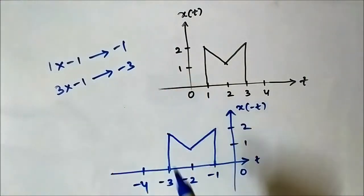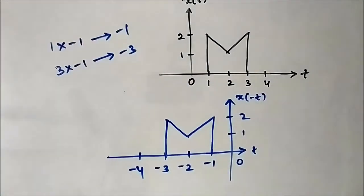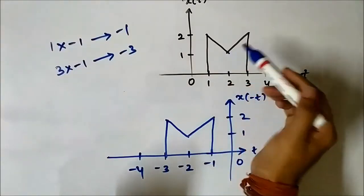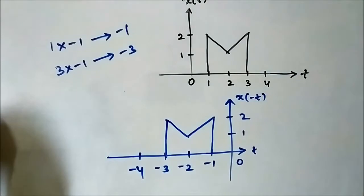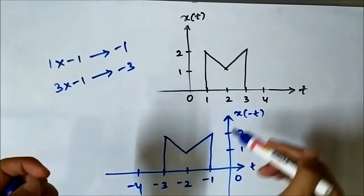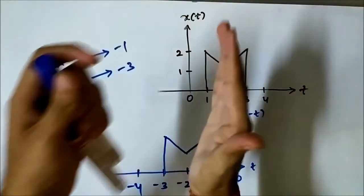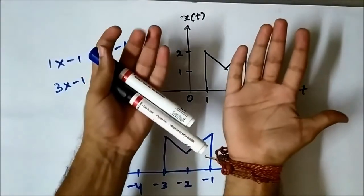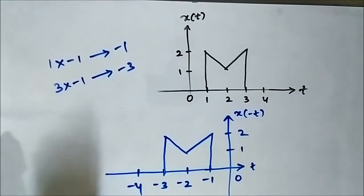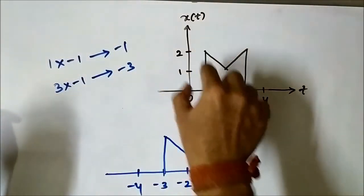The time-reversed signal spans from minus 3 to minus 1. This is the mirror image, or the folded version, of the original signal. If we fold it, both sides will exactly superimpose each other — if we fold around the vertical axis in both the positive and negative directions, they will exactly superimpose each other. This is the time reversal operation performed on this signal.